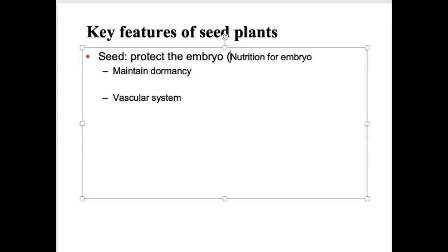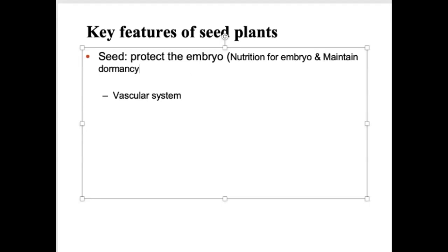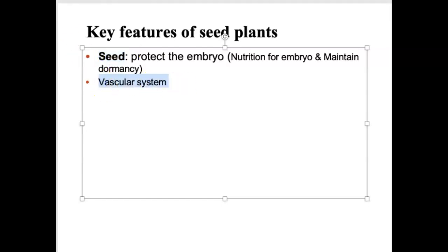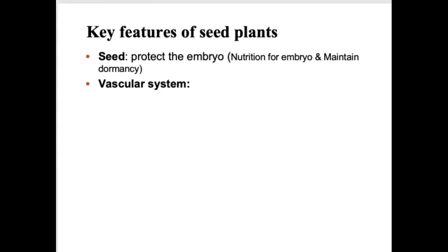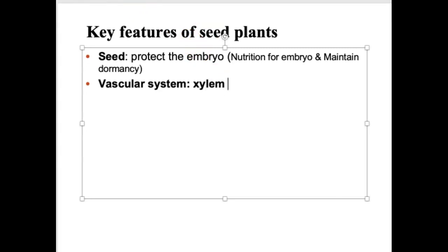Seed plants have a vascular system. We talked about this in previous lectures — vascular systems are incredibly important if you're going to get big, if you're going to grow tall, and be able to conduct nutrients. The key components of the vascular system we want to talk about are the xylem and the phloem. So all seed plants are vascular plants.